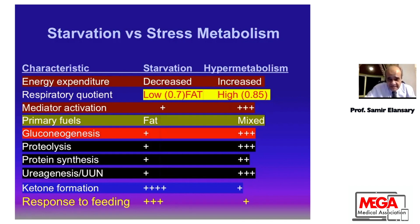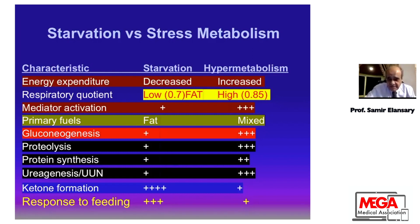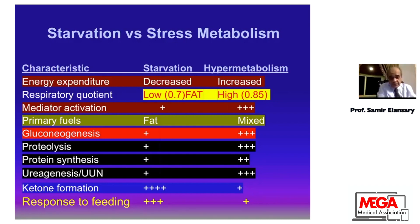Glyconeogenesis is increased dramatically in stress. Proteolysis is increased, protein synthesis is increased, and urogenesis — the formation of urea and metabolic products of protein — are all increased in stress. The starvation patient depends on ketone formation after the first few days, in contrast to the stressed patient who depends on endogenous macronutrients. Response to feeding after restarting shows abnormal processing in hypermetabolism, but in starvation the patient gains weight and consumes feeding normally without forming free oxidants or free cytokines.